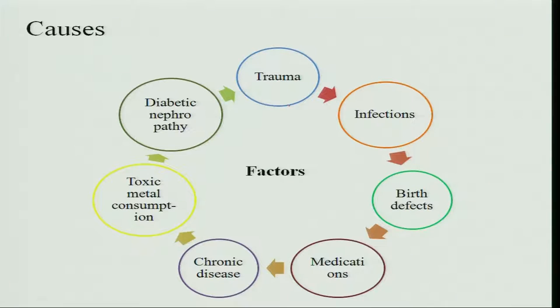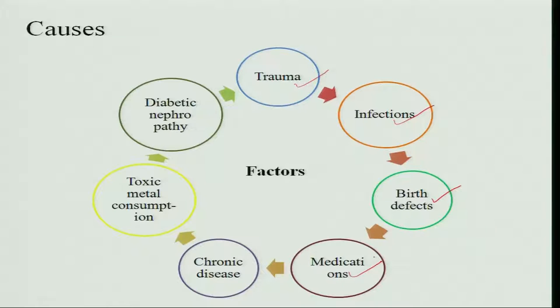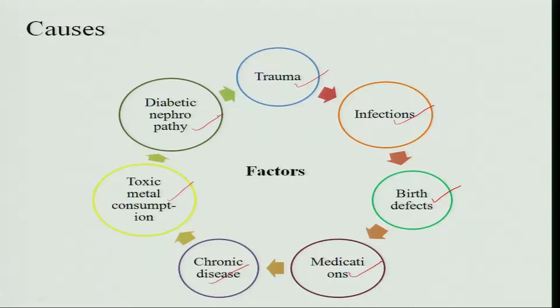The causes of kidney disorders include trauma or injury to the kidney, infections caused by streptococcus, birth defects, and medications that are overdosed or abused. Chronic diseases and toxic metal consumption can also damage the kidney, since the kidney filters toxic substances in the process. Additionally, uncontrolled diabetes leads to diabetic nephropathy, where high sugar levels cause the nephrons to be damaged from the excess filtration load.